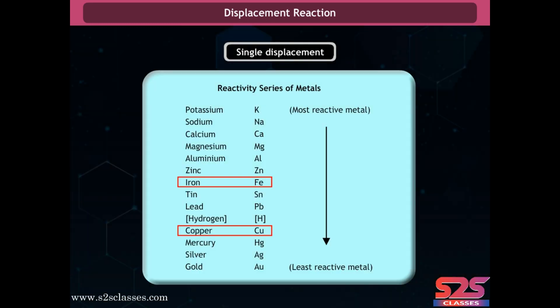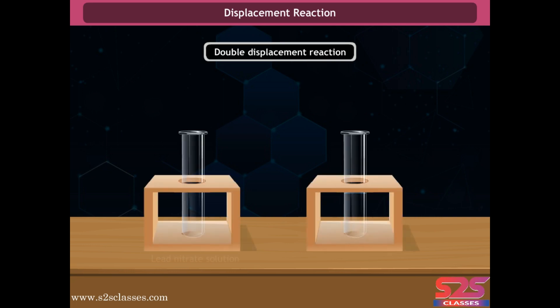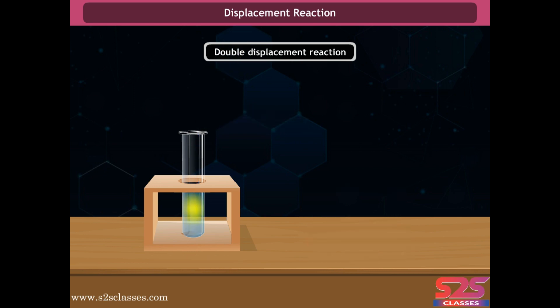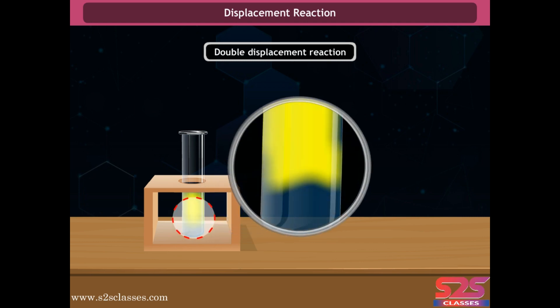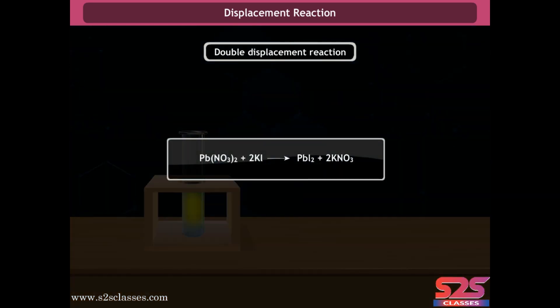The reactivity of metals can be known from the reactivity series, which lists metals in increasing order of reactivity. For double displacement reactions, take 2 ml each of lead nitrate and potassium iodide solution in separate test tubes. Gently pour the potassium iodide solution into the lead nitrate solution. A yellow precipitate of lead iodide forms immediately. The two compounds react by exchanging their ions to form new compounds — lead iodide and potassium nitrate.